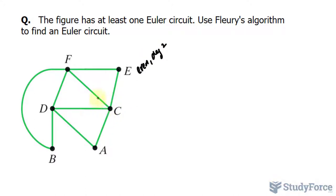C has one, two, three, four, even degree of four. A has one, two, D has one, two, three, four. F has one, two, three, four. And you get the idea. So we can start anywhere.